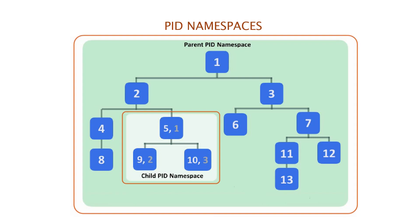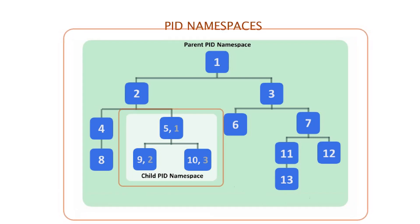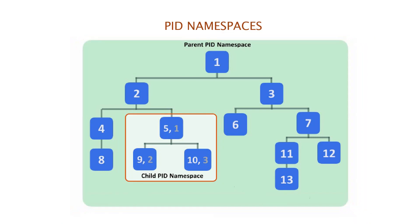Each PID namespace, or a container created with it, has its own init process with PID 1 that manages various system initialization tasks. From the point of view of a particular PID namespace instance, a process has two PIDs: the PID inside the namespace and the PID outside the namespace on the host system. In this example, PID 5 is a child process of PID 2 outside the namespace, but becomes PID 1 inside the namespace.